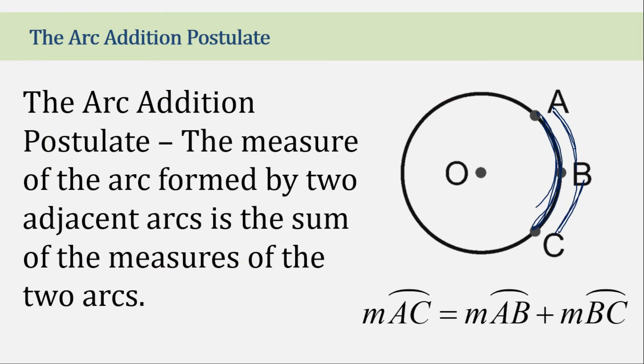Arc addition postulate. The measure of the arc formed by two adjacent arcs is the sum of the measures of the two arcs. So meaning, if we want to find the measure of arc AC,